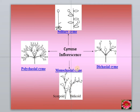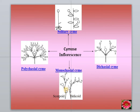This is called a helicoid cyme when the buds always develop towards one side, forming a helical structure. But alternatively, if the flowers are developed on the right and left side alternately — as seen in this diagram where first the left side bud developed, then the right side bud, then the left side again — and all are pedicellate flowers with branches, this is called a scorpioid cyme.